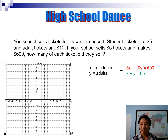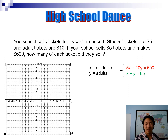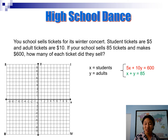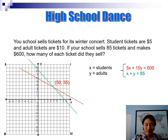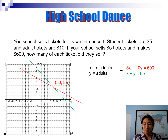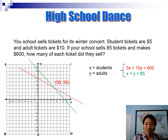We have two equations and two unknowns. Put them into y = mx + b form, enter them into the calculator, graph them, and find the intersection. The cost line and the people line intersect at 50 comma 35. Note that the graph is scaled by tens. The answer: there are 50 students and 35 adults.